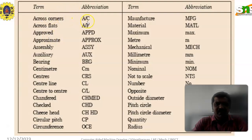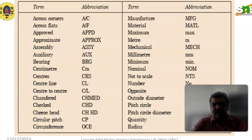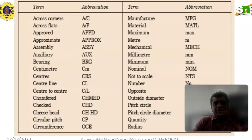Across corners abbreviation is AC. Across flats, approved, approximate, assembly, auxiliary, and bearing — BRG. Centimeter — CM. Center — CRS. Center line — CL. Center to center — C/L. Chamfered — CHMD. Checked — CHD. The term 'checked' is used in the title block, whether the drawing is verified. Checked and approved — these are the things in the title block abbreviations. APPD means approved; CHD means checked.